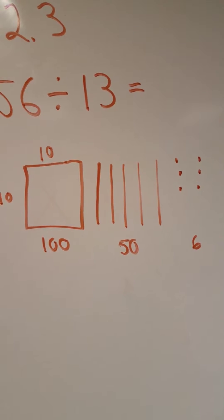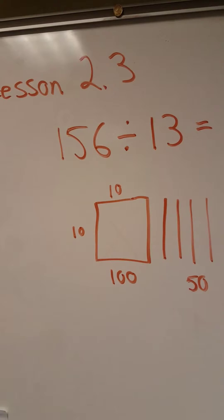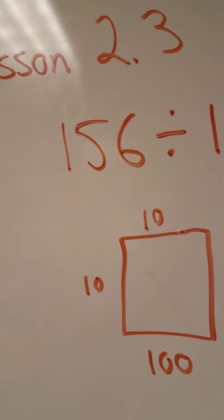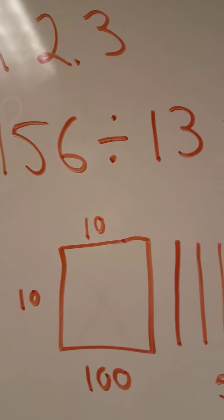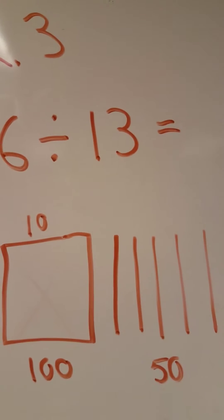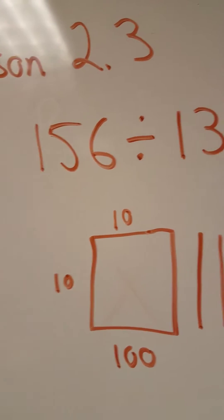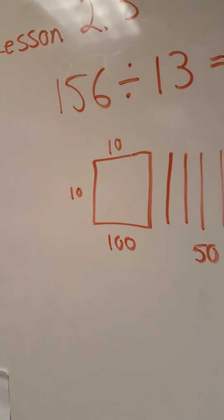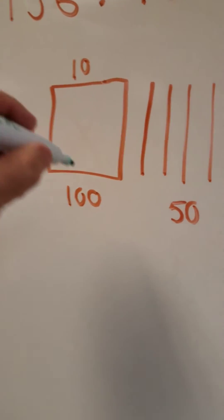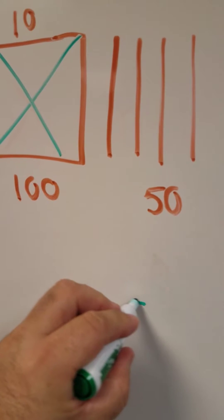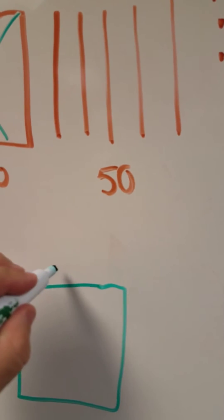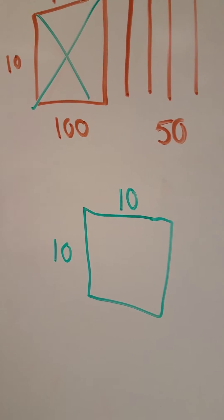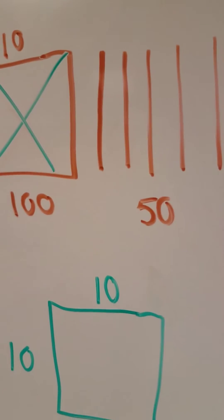Now I'm dividing by 13, so I'll show you what that means in just a second. One way I like to think of this problem is: there are 156 children, and they're going to sit in an auditorium where they can fit 13 children in each row. So I have 156 divided by 13 children in a row. So my question is: how many rows can I make?